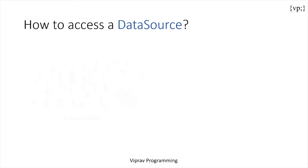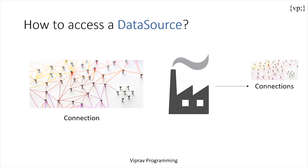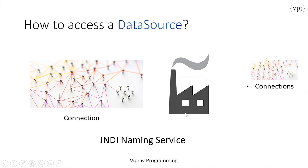Applications access a data source by using something called a connection. A data source object can be thought of as a factory for connections to the particular data source that the data source instance represents. A data source object may also be registered with the JNDI naming service. If so, an application can then use the JNDI API to access this data source object, which can then be used to connect to the data source it represents. What that means is this factory has a really long name, but you can put a name on that factory — let's say Ford — and when you call Ford, you call this factory, and this factory will create connections that can then connect to your databases.